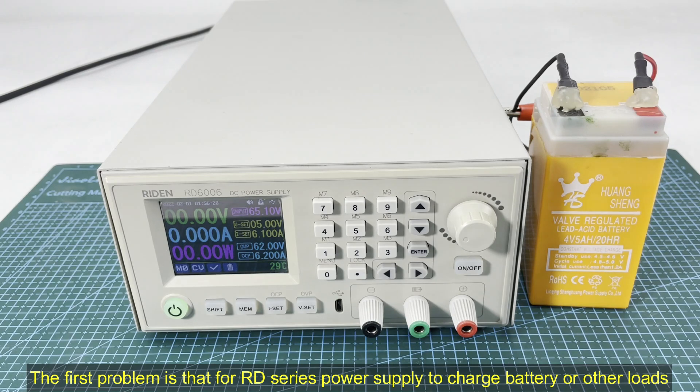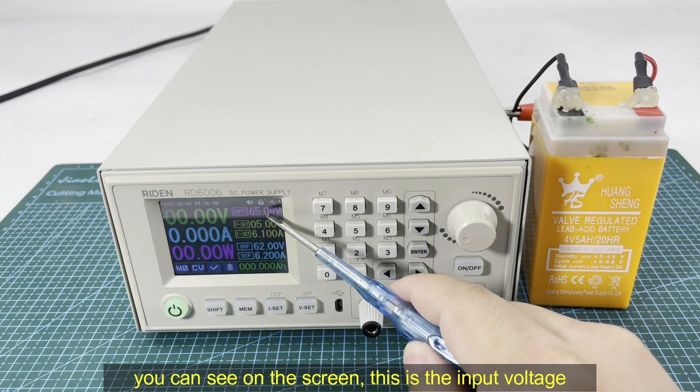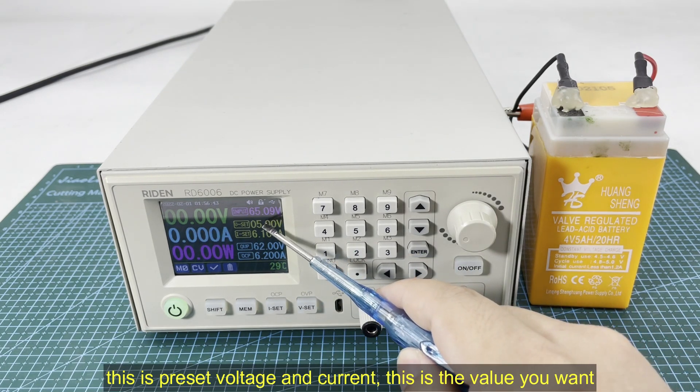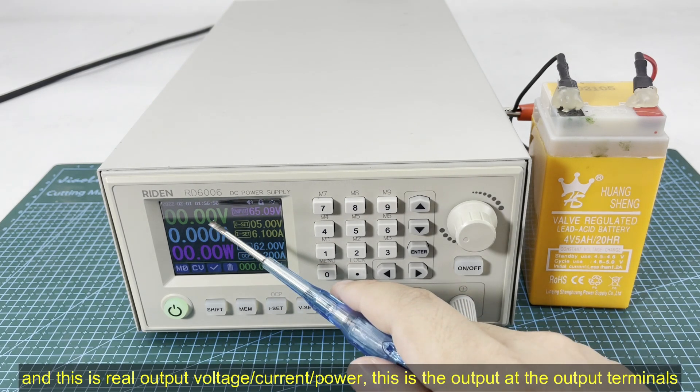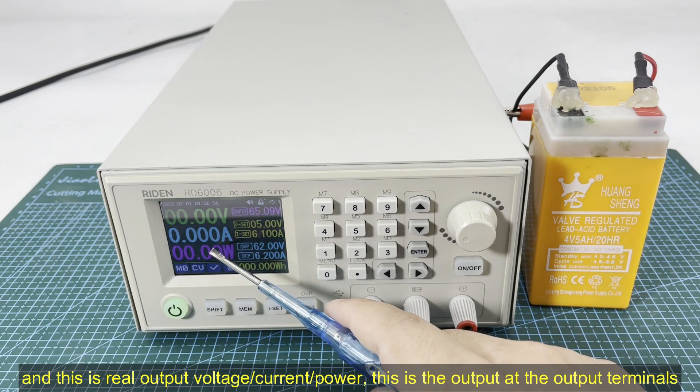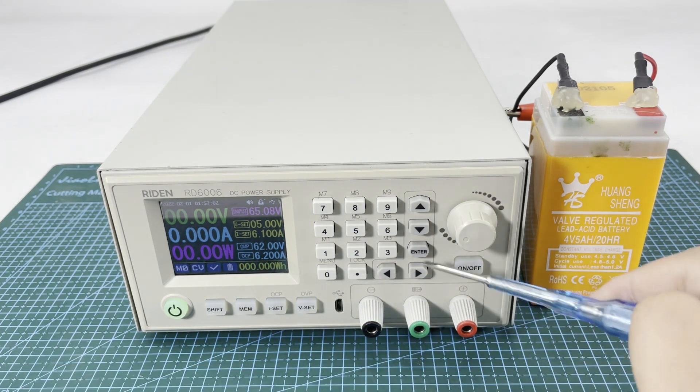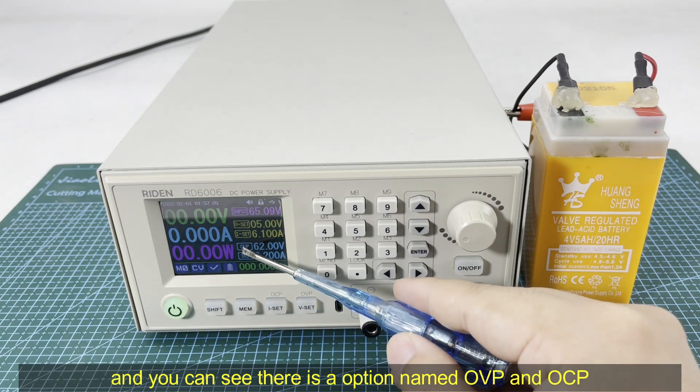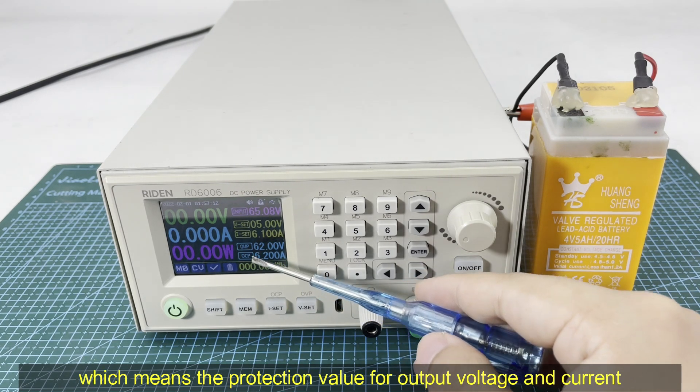The first problem is for our RD series power supply to charge battery or other things. You can see on the screen there is the input voltage, preset voltage, and preset current. This is the value you want. And this is the real output voltage, current, and power at the terminals. You can see there is an option named OVP and OCP which means the protection value for output voltage and current.